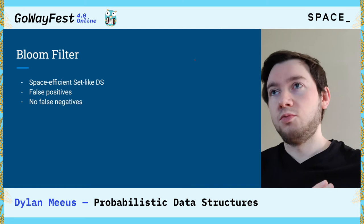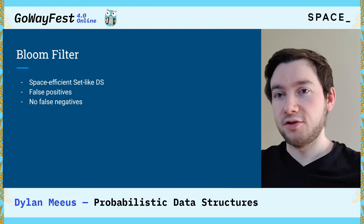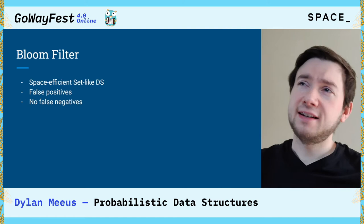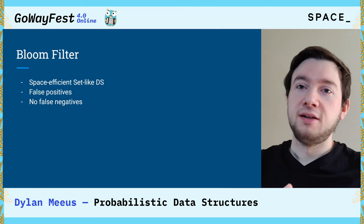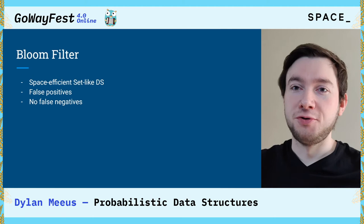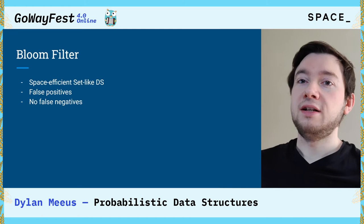The first of these structures is a bloom filter. A bloom filter is a space-efficient set-like data structure — it's going to act like a set but use less memory. The downside is that it has false positives. When the bloom filter tells you your username is taken, it might be lying to you. But if it tells you it is not taken, you are 100% sure that it's not taken. So you only get false positives, but you do not get false negatives.